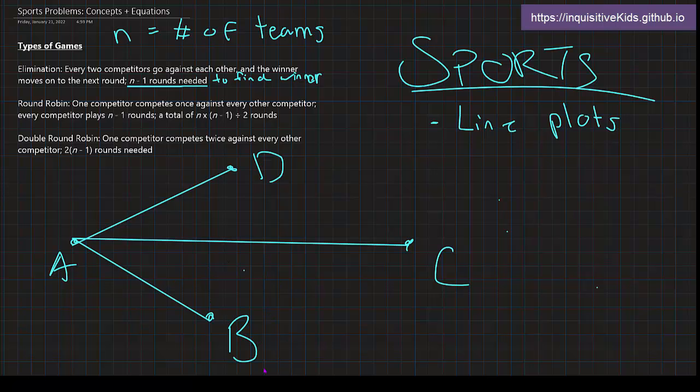Every two teams only have one competition between them. So that's three. Now B can't go back with A because they already did that. B would compete against C and D—that's two more. Now C is going to go with D because that's the only one available—plus one. That would be a total of six games.